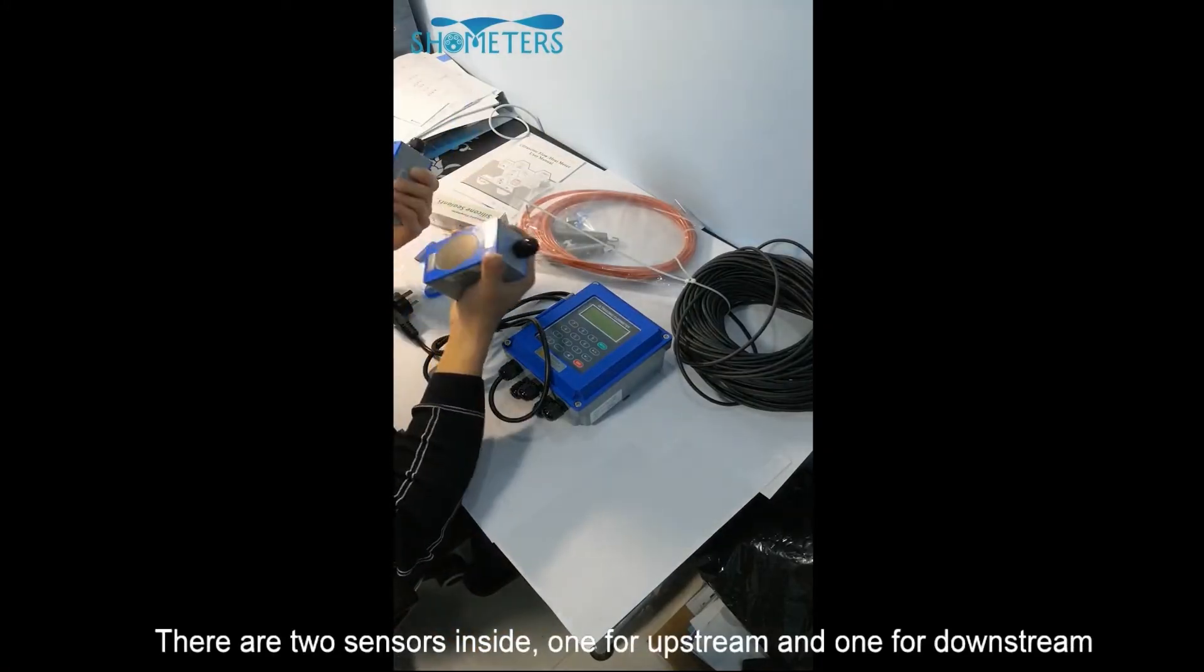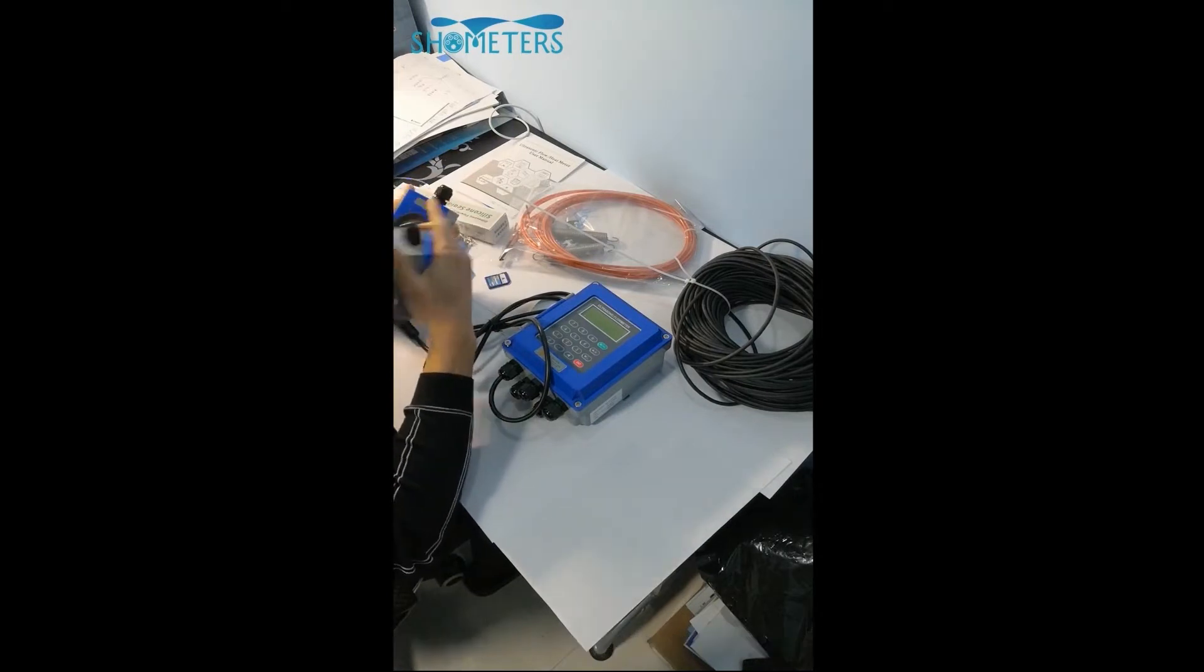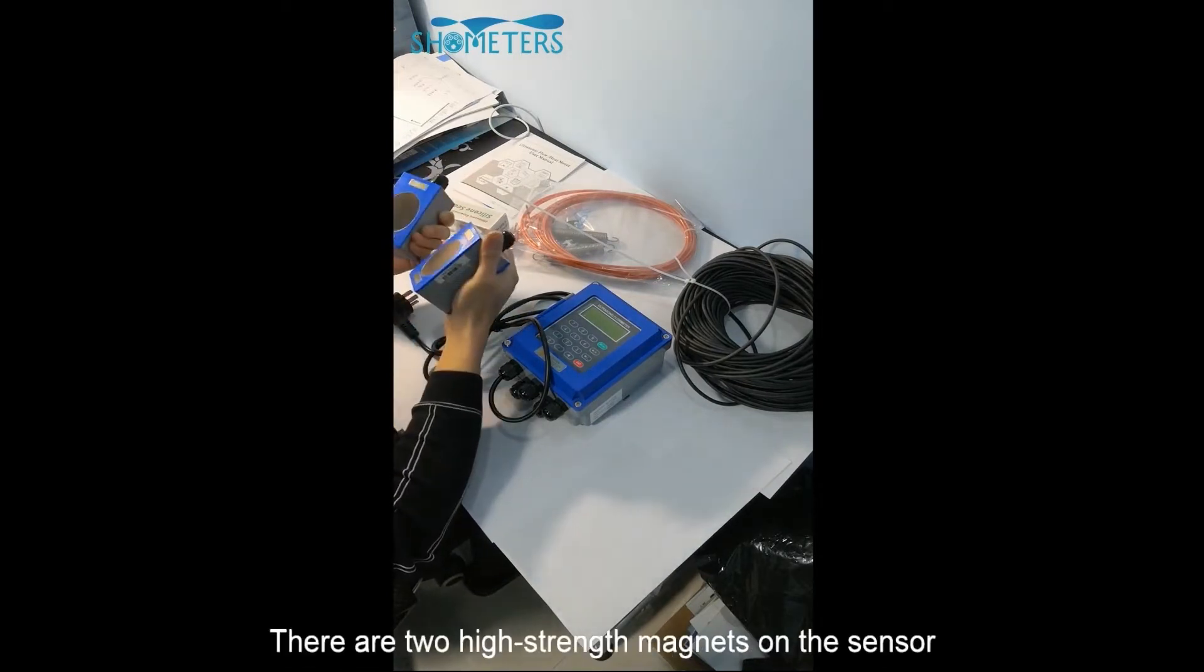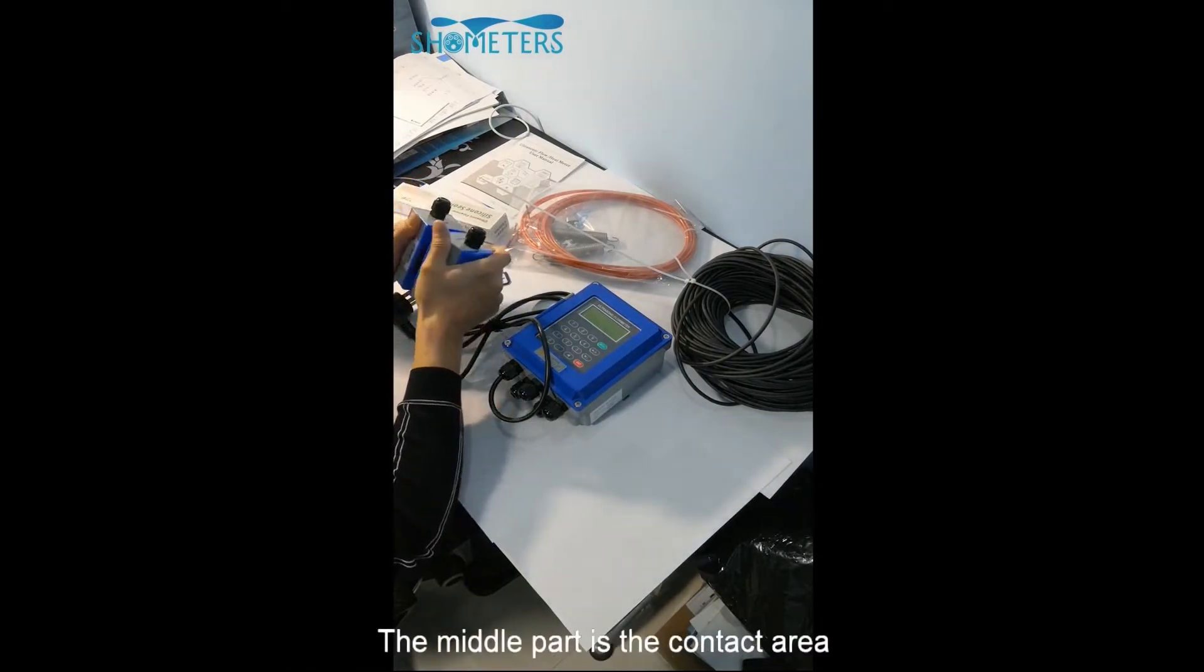There are two sensors inside, one for upstream and one for downstream. There are two high-strength magnets on the sensor. The middle part is the contact area.